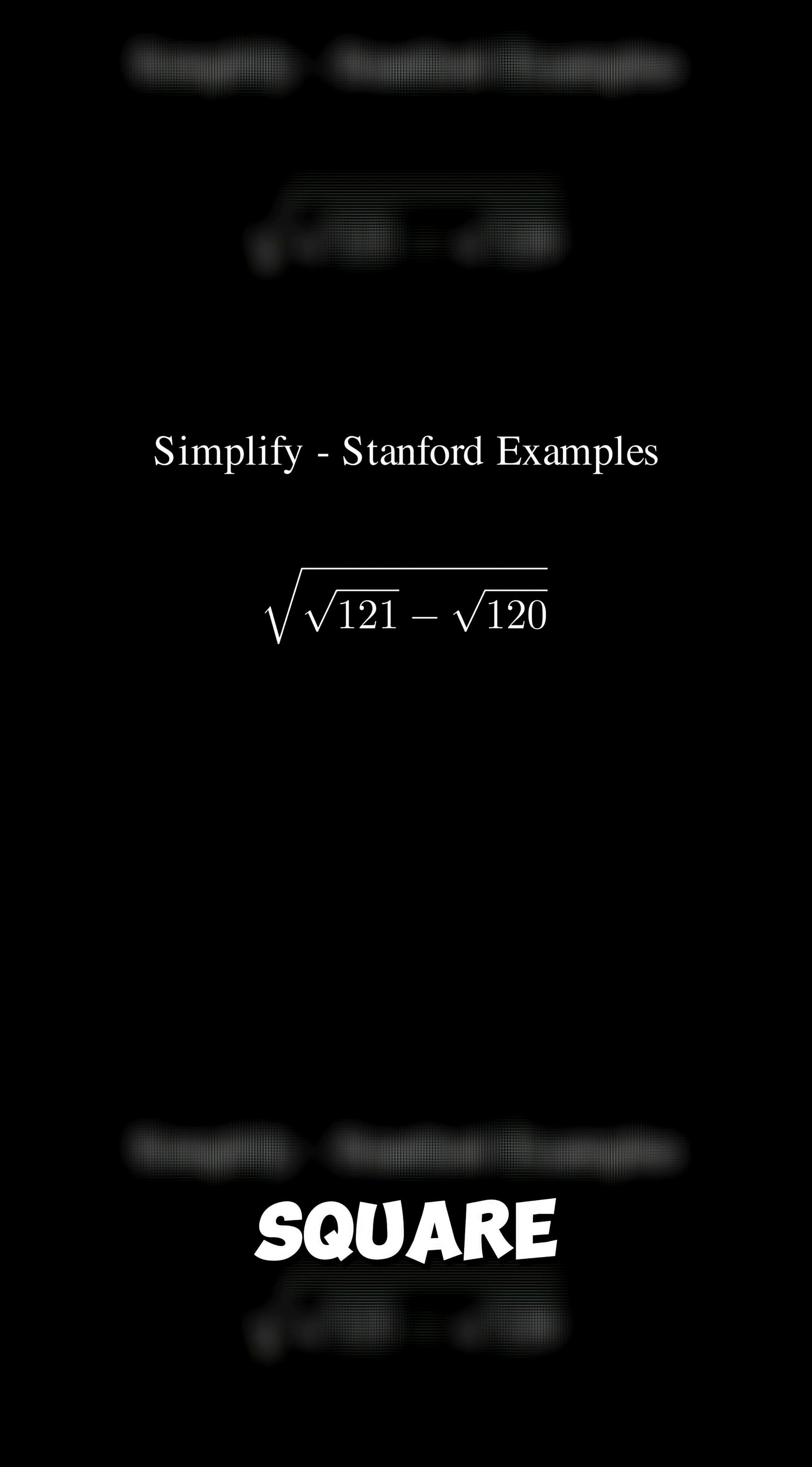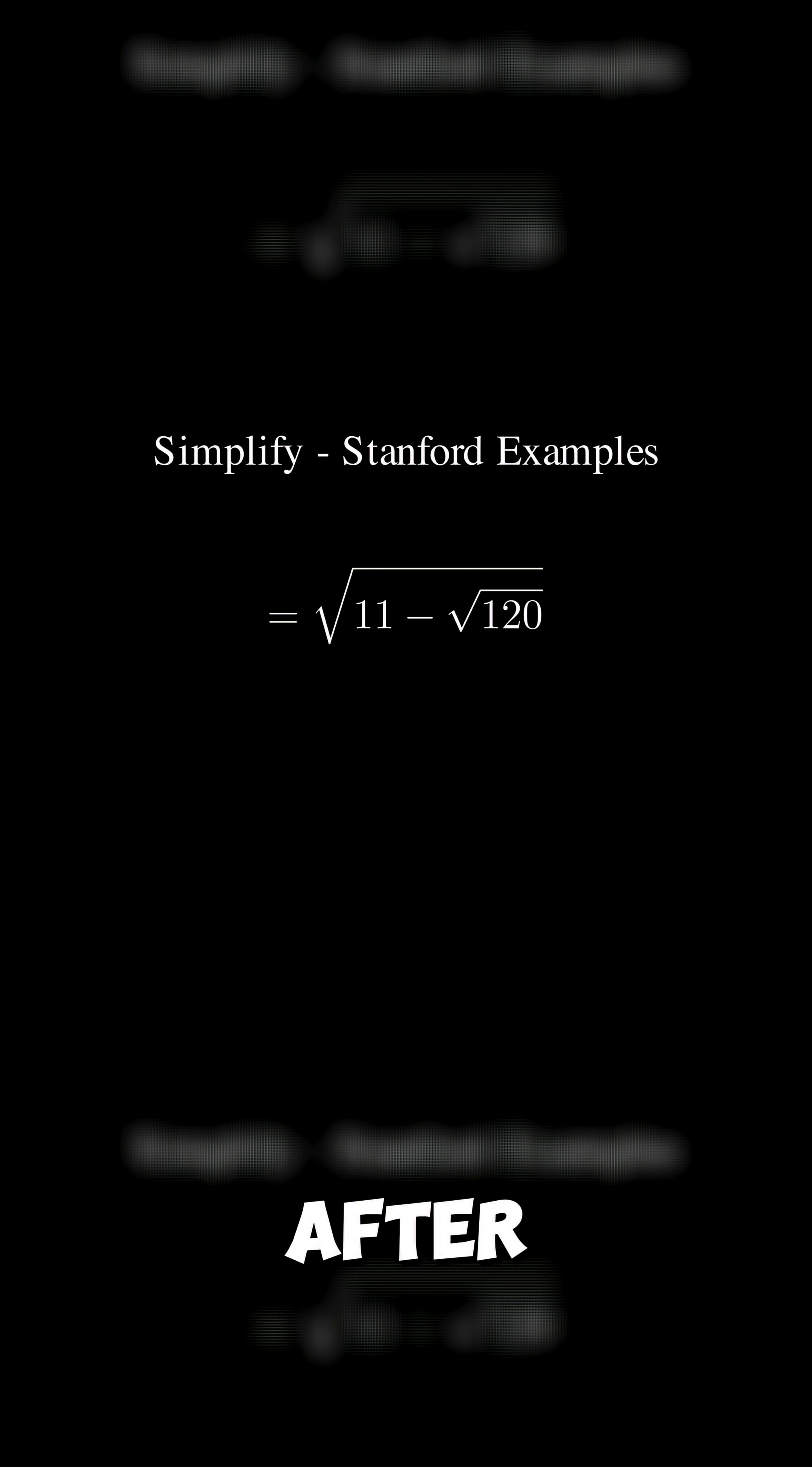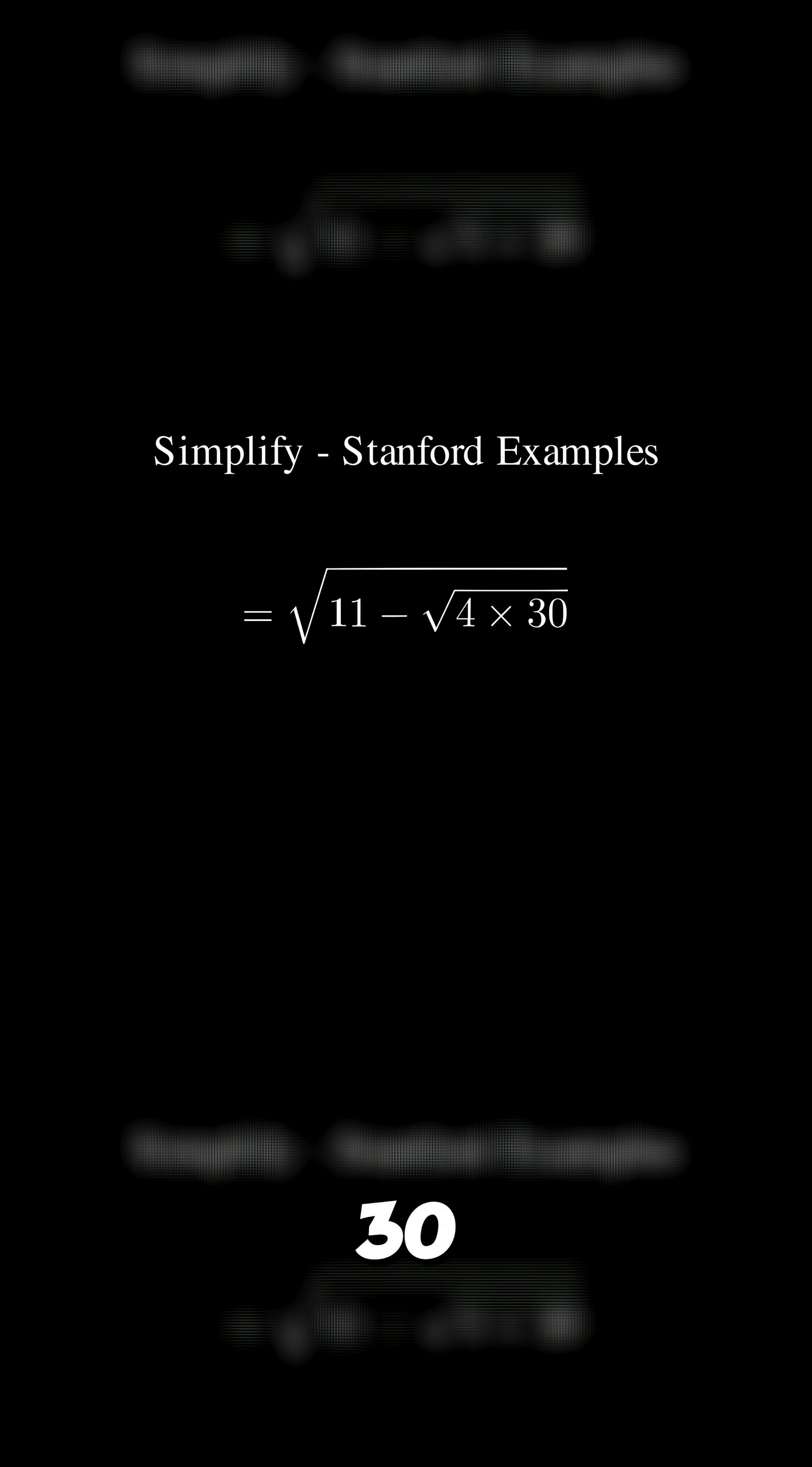Let's simplify this tricky square root expression step by step. First we simplify square root of 121 into 11. After that we can factor 120 as 4 times 30. Then we simplify root 4 into 2, leaving root 30.